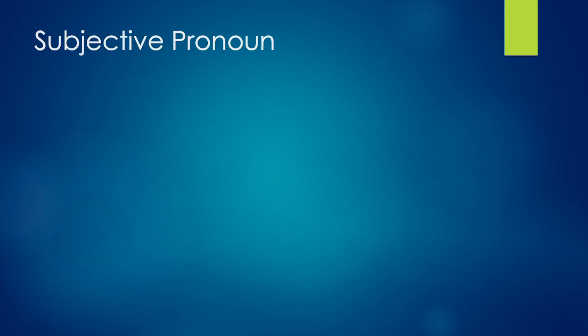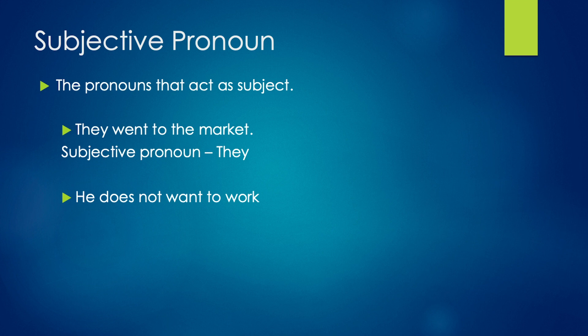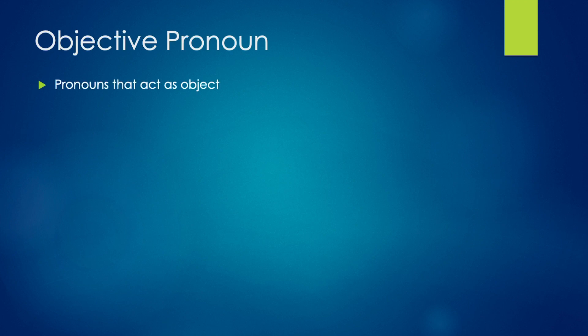Subjective pronouns: the pronouns that act as the subject in the sentence are called subjective pronouns. For example, 'They went to the market' — here 'they' acts as the subject of the sentence, so it is a subjective pronoun. Similarly, in the sentence 'He does not want to work,' 'he' is also a subjective pronoun. Other examples of subjective pronouns are: I, you, she, it, we, etc.